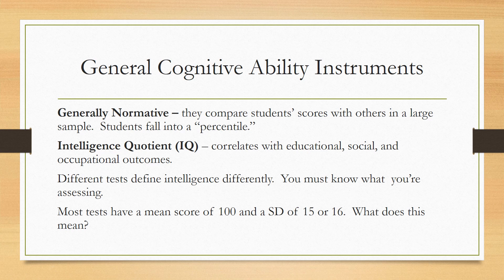General cognitive ability instruments fall into the category of aptitude tests. They are also generally normative — they compare students' scores with others in a large sample. For example, IQ tests determine where you fall in the general population, sometimes expressed as a percentile. If you are in the 99th percentile, you score as well as or better than 99% of other students. We know that IQ, which stands for intelligence quotient, correlates with educational, social, and occupational outcomes.